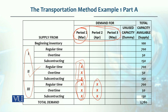दूसरी important चीज़ cost की बात है। For example, beginning inventory अगर हम first period में ही use करते हैं तो उसकी cost zero होगी। अगर यही inventory हम second period में use करते हैं तो एक period के लिए $2 carrying cost है। अगर third period में use करते हैं तो $4 की cost पड़ेगी। इसके इलावा एक column है जो unused capacity का है — this is called dummy.